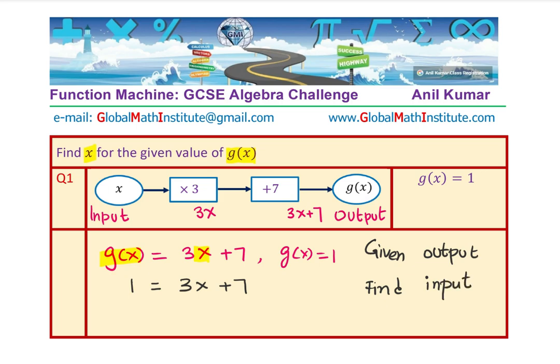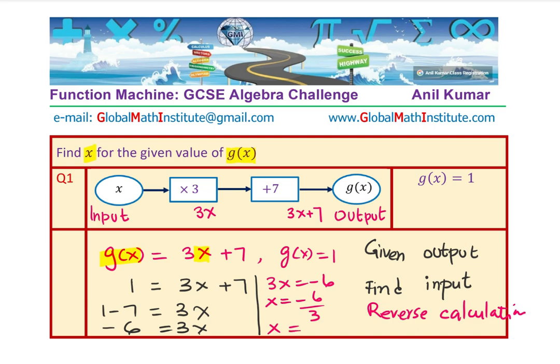You can write this as, given output, find input. It is that kind of equation. It involves reverse calculation. Let us do that. We will now take 7 to the other side. So we have 1 minus 7 equals to 3x, which is negative 6 is equal to 3x. From here, you can find the value of x. Since 3x equals to negative 6, x is equal to negative 6 over 3, and therefore, x is equal to minus 2. We have our solution, which is x equals to negative 2. This is one way of doing it, and that is the algebraic method.